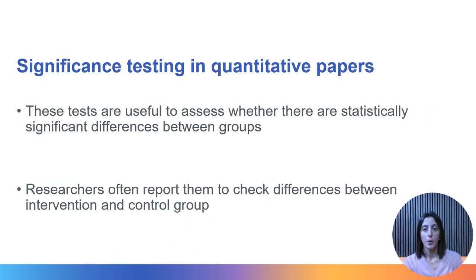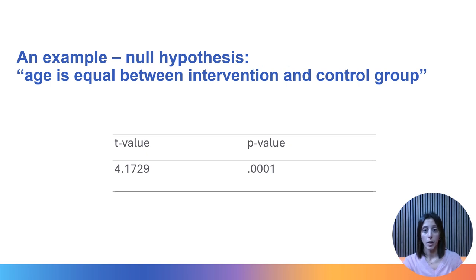We now take a step further and look at tests of significance reported in quantitative papers. Let's imagine that researchers, before testing whether the intervention was effective, start to worry about the differences in age and gender they noticed between groups. They decide to run a series of tests to check if these differences are statistically significant — in other words, whether the differences between groups are large enough to represent a difference also in the population. They formulate a null hypothesis — in this case, that age is equal between intervention and control group in the population — and run a two-sample t-test.